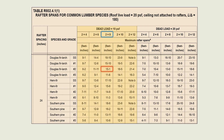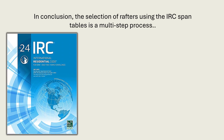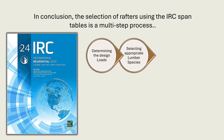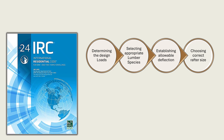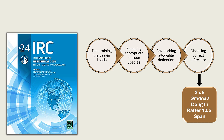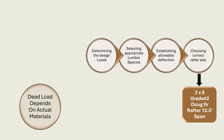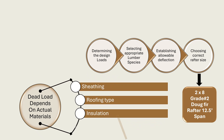This is how rafters are selected from the IRC span tables. In conclusion, the selection of rafters using the IRC span tables is a multi-step process that involves determining the design loads, selecting the appropriate lumber species and grade, establishing the allowable deflection, and choosing the correct rafter size. In our example, we arrived at 2x8 Douglas fir grade number 2 rafters spanning 12.5 feet. In real projects, the dead load depends on the actual materials used in the roof assembly, such as sheathing, roofing type, insulation, and sealing finishes.